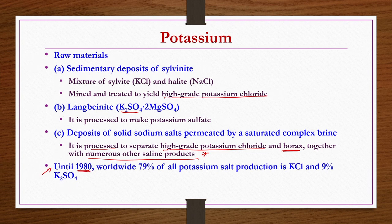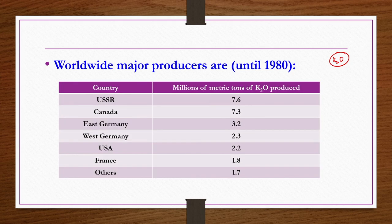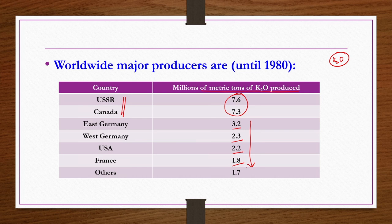Looking at statistics until 1980, of all potassium salts produced, KCl occupied 79 percent and K₂SO₄ occupied 9 percent. Worldwide major producers of potassium, measured in millions of metric tons of K₂O produced, were: USSR and Canada close to each other, East Germany at 3.2, West Germany at 2.3, USA at 2.2, and France at 1.8.